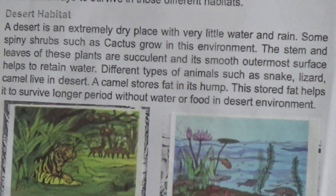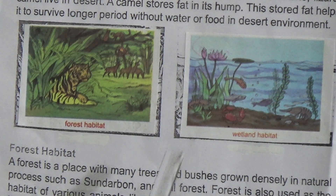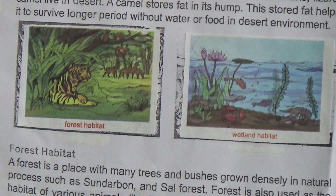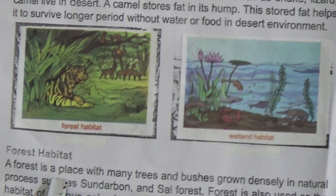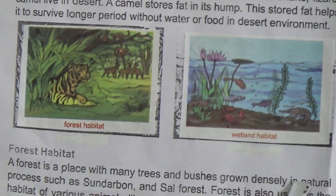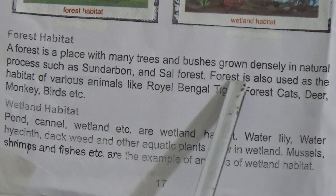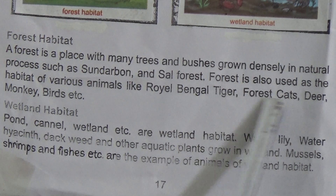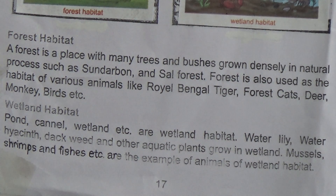Here is a forest habitat with some animals — this is a tiger. Forest habitat: a forest is a place with many trees and bushes grown densely in a natural process, such as the Sundarbans and Shawl forest. The forest is also used as the habitat of various animals like the Royal Bengal tiger, forest cats, deer, monkeys, birds, and more.